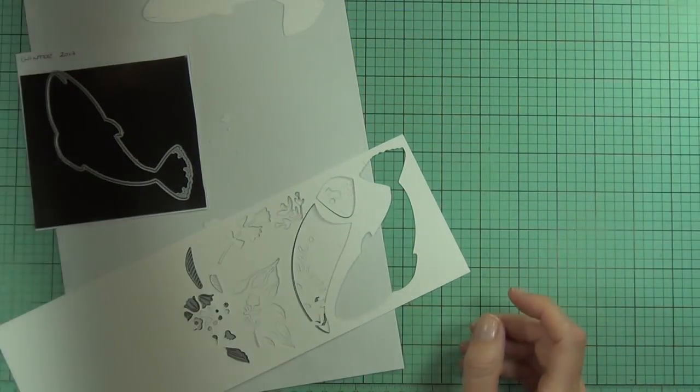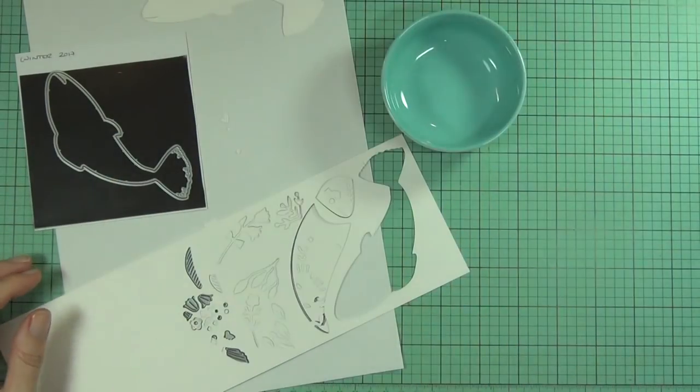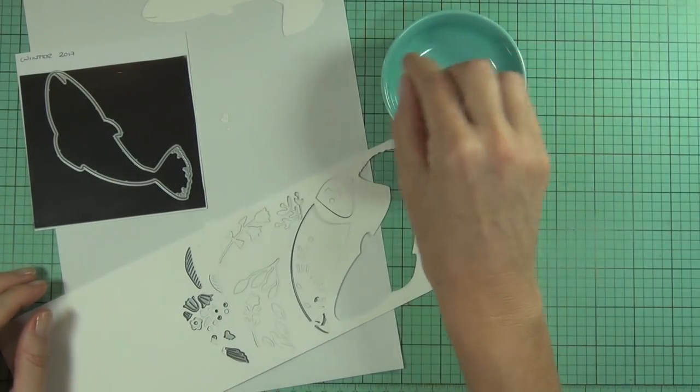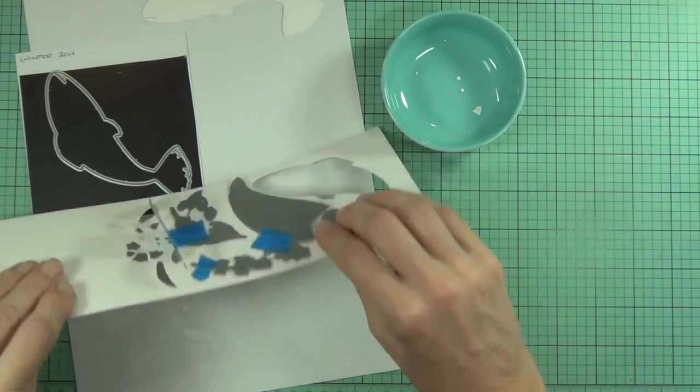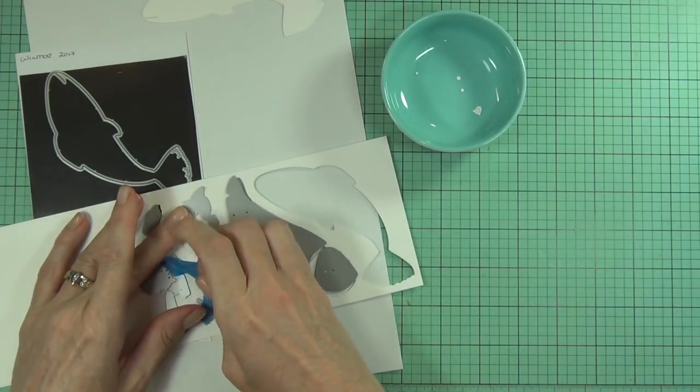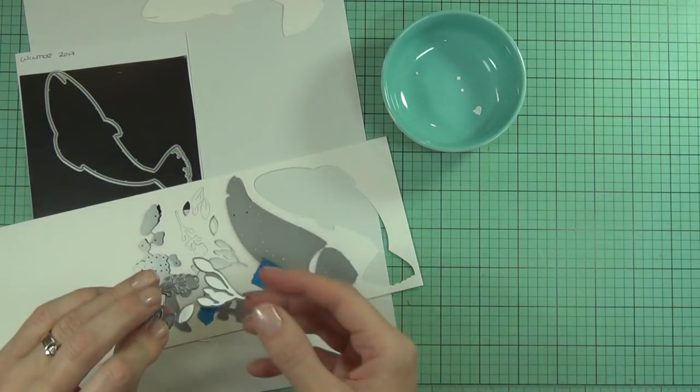So this is a really intricate die from Waffle Flower Crafts called Make a Fish and it's heaps of fun but there's so many tiny little pieces. Now what I've done here, and this is one of the easiest things you can do, is I've actually die cut the whole design out of white cardstock.